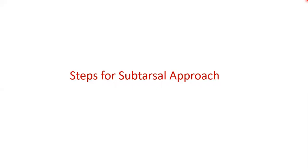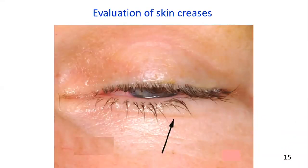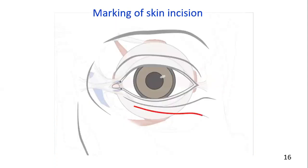Now we will explain the steps for a subtarsal approach. Protection of the globe can be achieved with this approach. First, identify and evaluate the skin creases. Marking of the incision line is placed in a natural crease at a level below the inferior margin of the lower tarsus. If edema is present, the direction of the skin creases may not be available, so the contralateral eyelid determines the direction and position of the creases. Or the incision is made approximately five to seven mm from the lower eyelid margin following an inferior lateral cant, approximating the normal subtarsal crease.